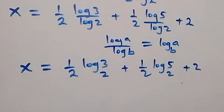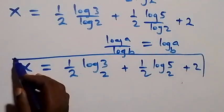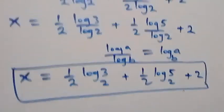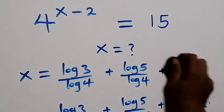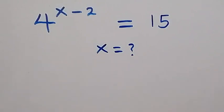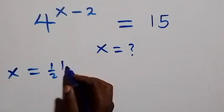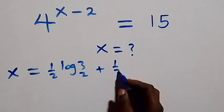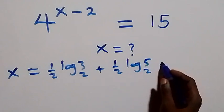So this becomes x equals to one half log 3 base 2, plus one half log 5 base 2, plus 2. Now let's check if what we have satisfies the given problem. We have x equals to half log 3 base 2, plus half log 5 base 2, plus 2.